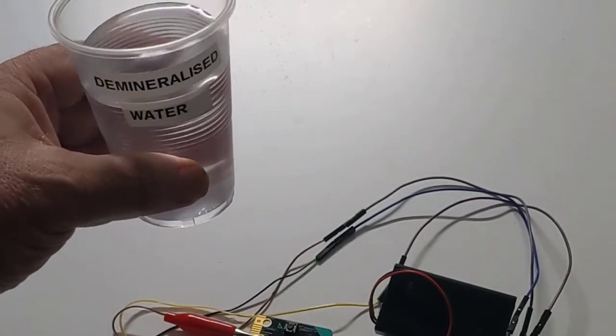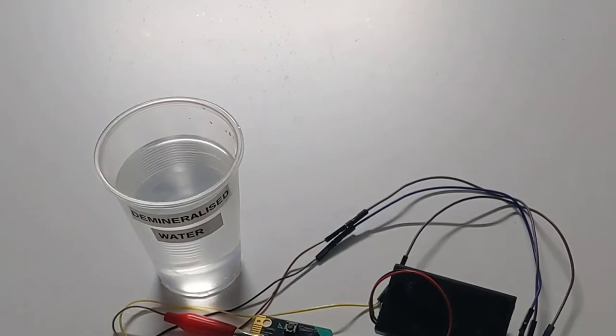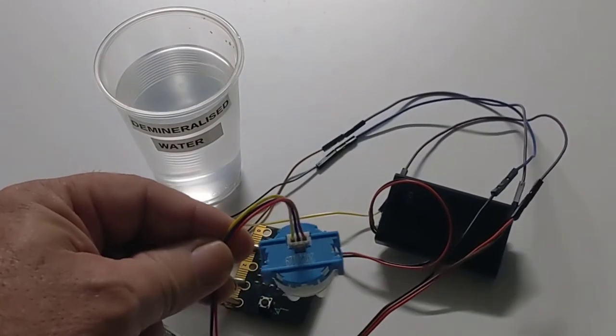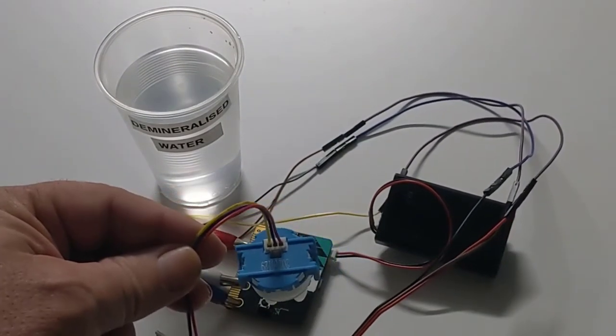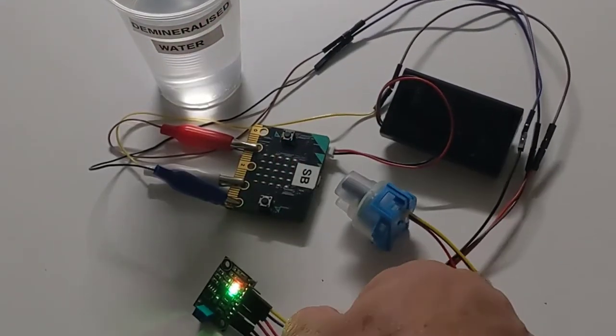I have some demineralized water here that you can see and I need to calibrate this little meter. So I'm going to turn on the microbit. As you can see, a couple of little LEDs light up.